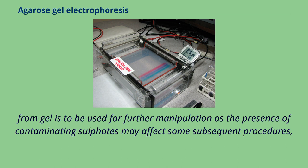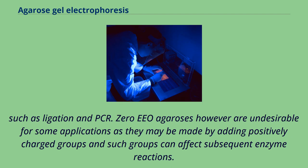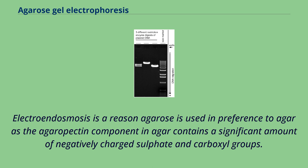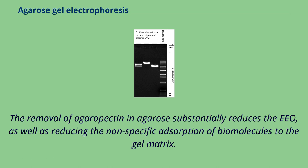The lower sulfate content of low EEO agarose, particularly low melting point agarose, is beneficial when DNA extracted from the gel is to be used for further manipulation, as contaminating sulfates may affect subsequent procedures such as ligation and PCR. Zero EEO agaroses, however, may be made by adding positively charged groups which can affect subsequent enzyme reactions. Electroendosmosis is a reason agarose is preferred over agar, as agar's pectin component contains significant negatively charged sulfate and carboxyl groups. Removing agar pectin in agarose substantially reduces EEO and non-specific adsorption of biomolecules.